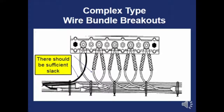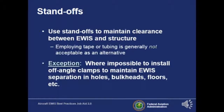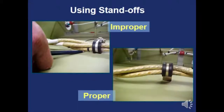There should be sufficient slack when wires are routed from terminals into their bundles — they should not be super tight. A standoff is a small component used to maintain clearance between the wires and the structure. Here's an example: it's basically a clamp that allows the wires to stand off away from the structure.